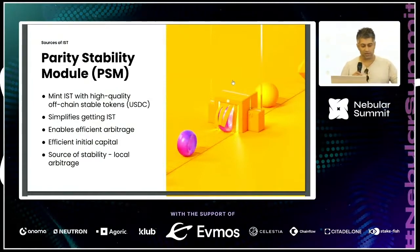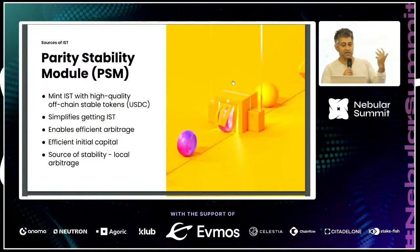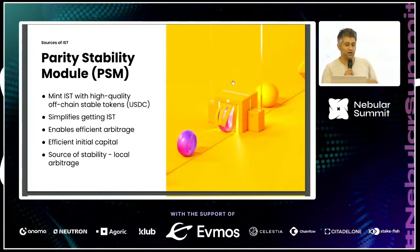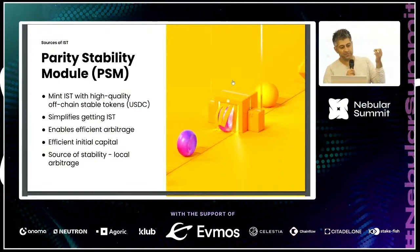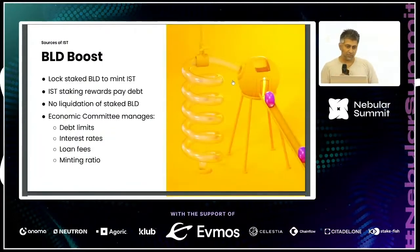A lot of collaboration with the Osmosis ecosystem, the ATOM ecosystem, and Circle will have bridge stablecoins — things like Axelar and Nomad — coming over. BLD holders will set limits on how much IST gets minted by each potential asset. The parity stability module enables efficient arbitrage and efficient retiring of debt during periods of volatility, maintaining the stability of the asset.